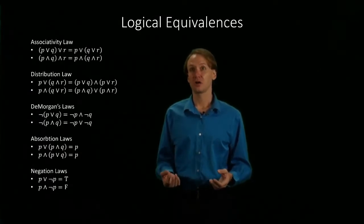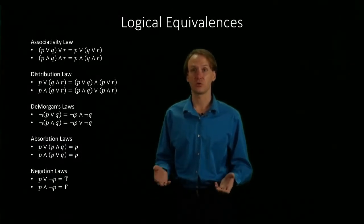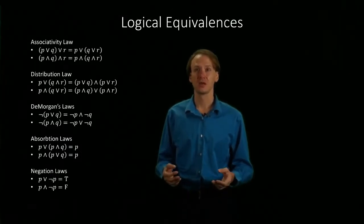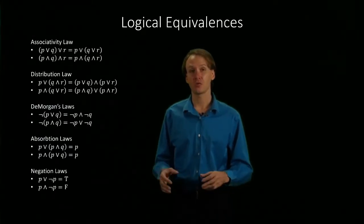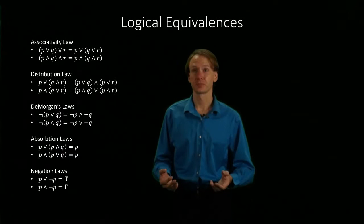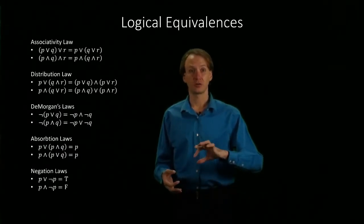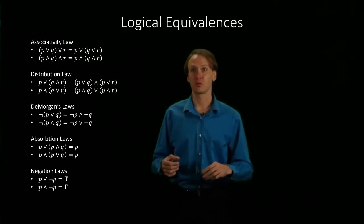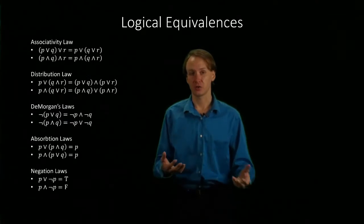De Morgan's laws are one of the more interesting and less obvious of these logical equivalences. De Morgan's laws allow you to distribute a negation over a complex proposition. But in doing so, we end up flipping ors to ands or ands to ors, and the way we're used to a distributive law, we wouldn't expect that we'd have to change our ands to ors.